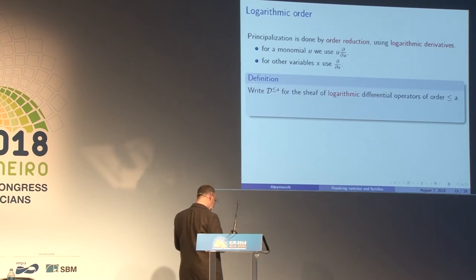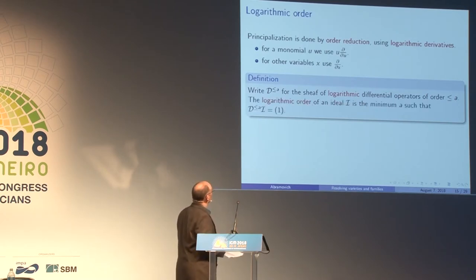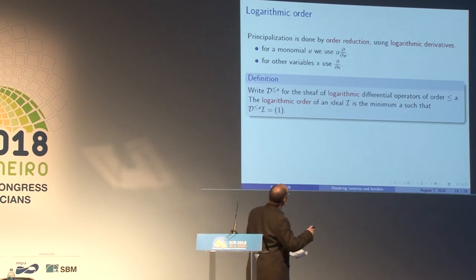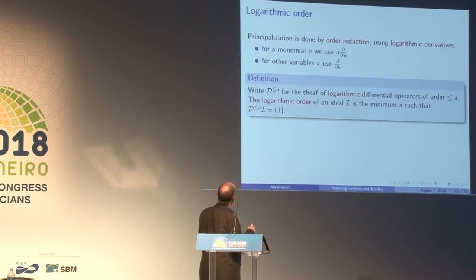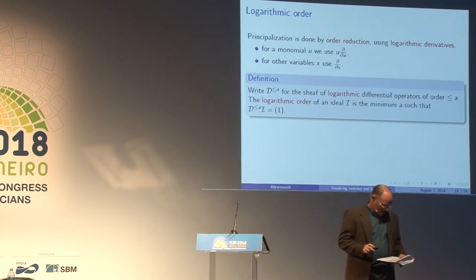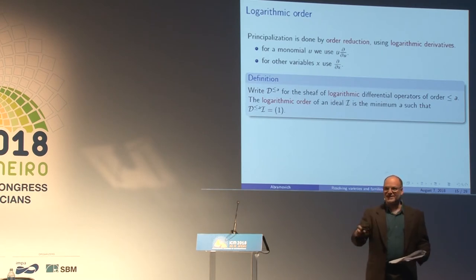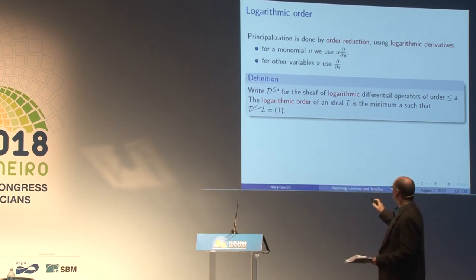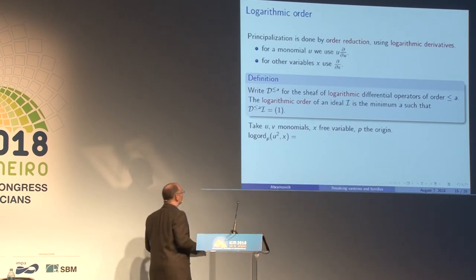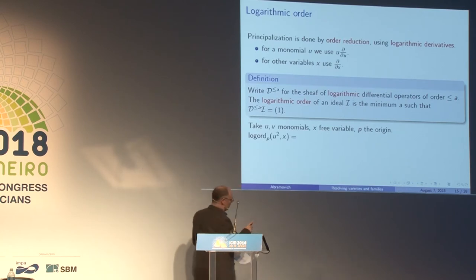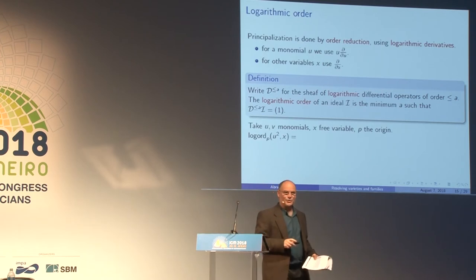I define the logarithmic order of an ideal I to be the minimum number a such that applying the differential operators up to order a to I gives the unit ideal. This slide is the active learning slide: if u and v are monomial, x is a free variable, and p is the origin, what is the logarithmic order at the origin of the ideal (u², x)? It is one, because d/dx of x is 1, a unit.